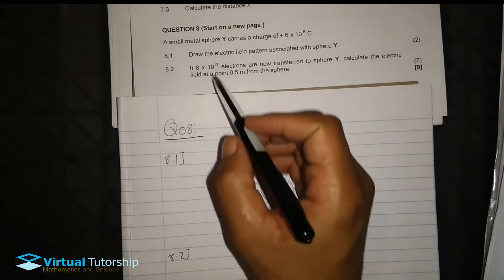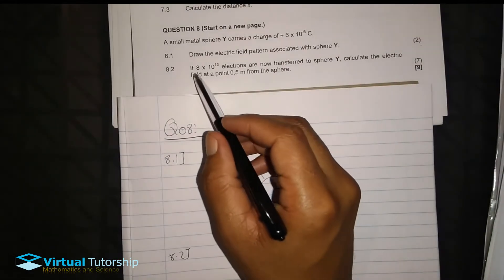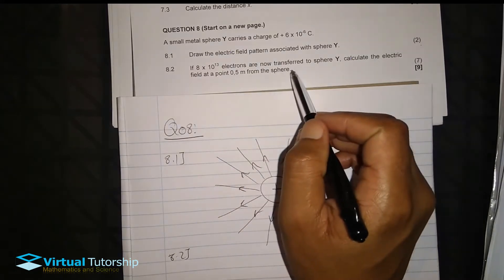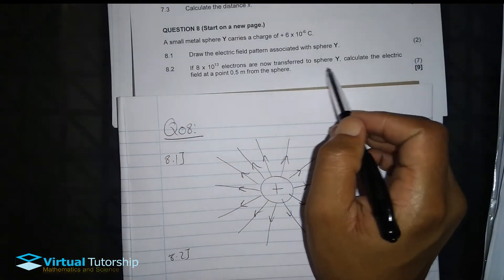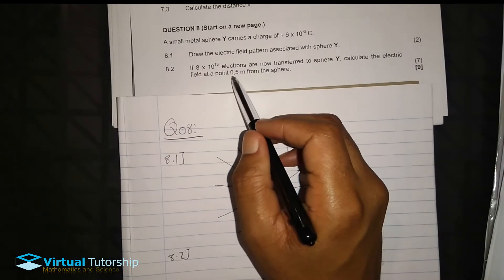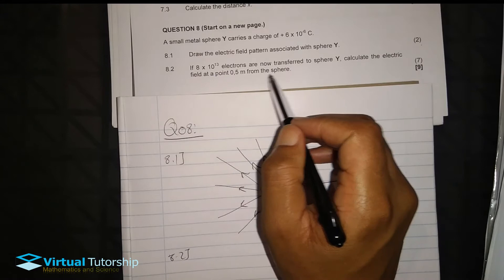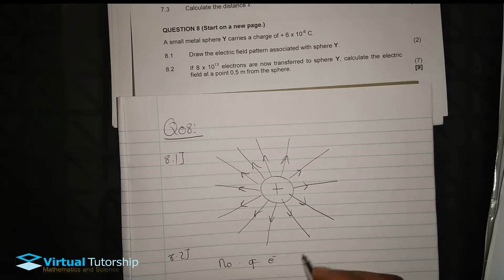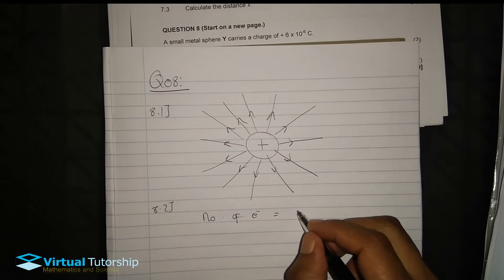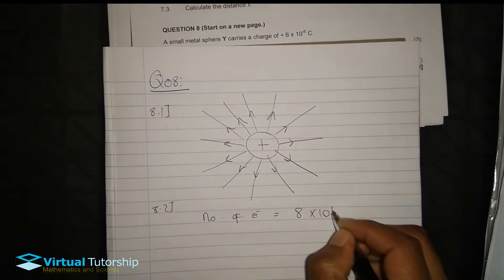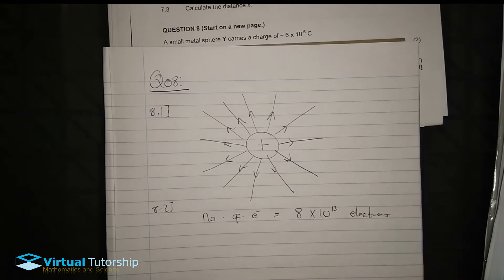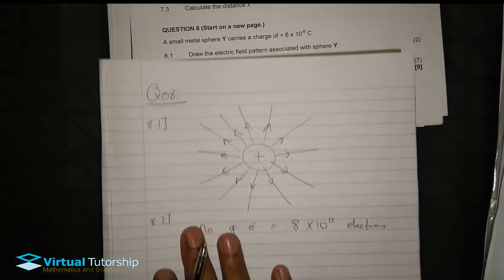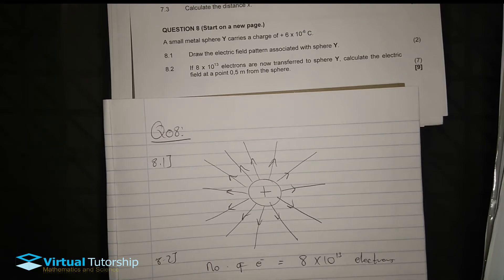Right, 8.2. The small calculation here. Particularly, if 8 times 10 to exponent 13 electrons are now transferred to sphere Y, calculate the electric field at 0.5 meters from the sphere. So, a number of electrons were transferred to sphere Y.